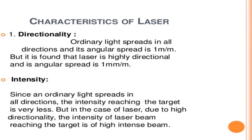Laser has several characteristics. The first one is directionality. Ordinary light spreads in all directions and its angular spread is 1 meter per meter, but laser is highly directional and its angular spread is 1 millimeter per meter.